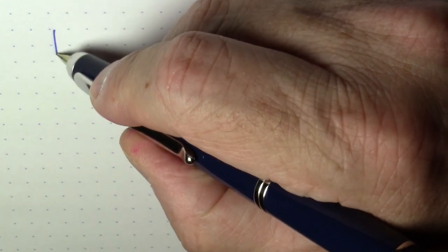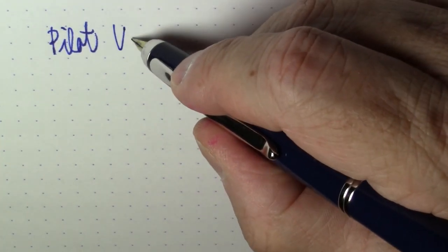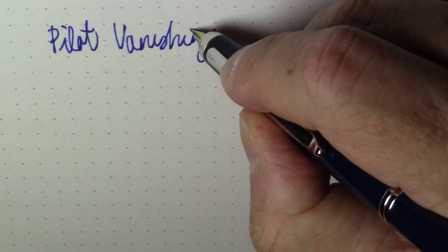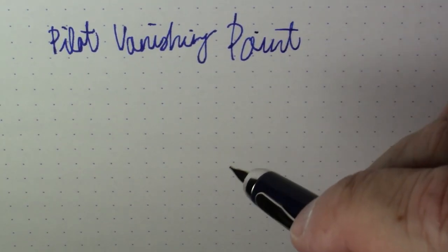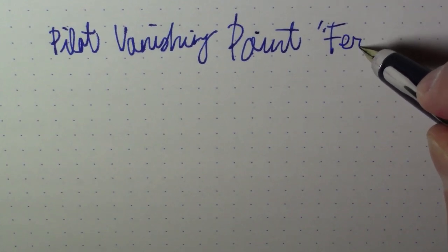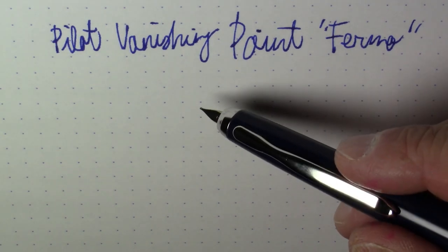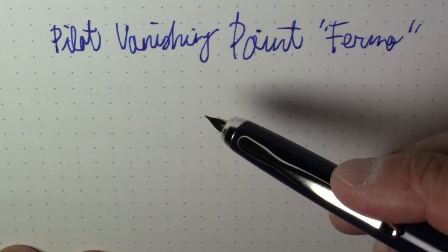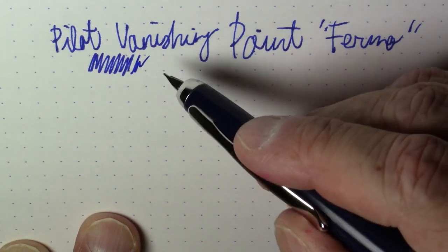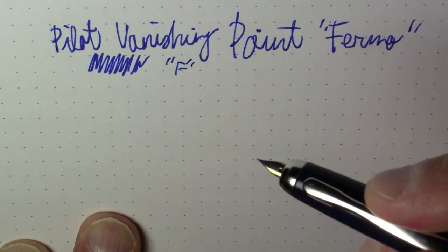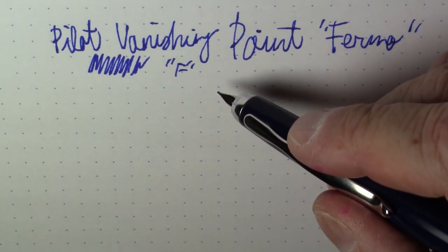Okay what we're writing with here today is a Pilot Vanishing Point Fermo. So this is the different type of opening and closing mechanism that the normal vanishing point has.